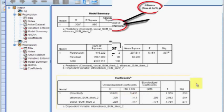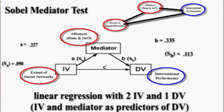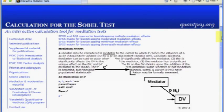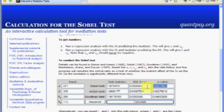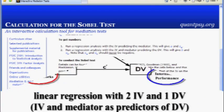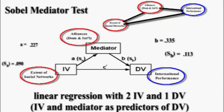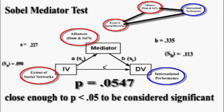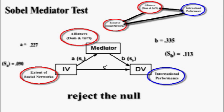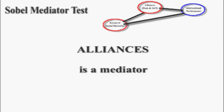Back to the Sobel mediator test calculator — type in the unstandardized coefficients from the two models with their standard errors, then click Calculate. We get a p-value of .054, which is very close to the critical alpha of .05. Along with its unusually large beta weight, that's close enough to be considered significant. We can go ahead and reject the null and say that alliances is in fact a mediator.